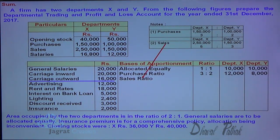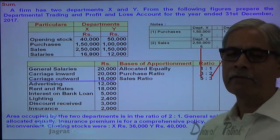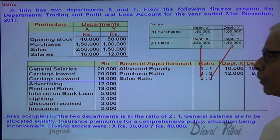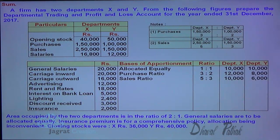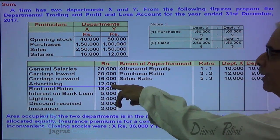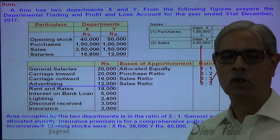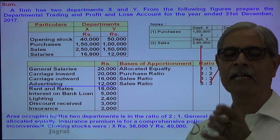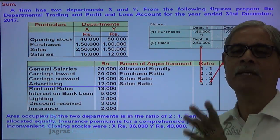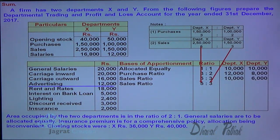Carriage outward uses the sales ratio of 5:3. So 16,000 is distributed as 10,000 and 6,000. Advertisement: 12,000 distributed in the sales ratio 5:3, because advertisement expenditure is incurred for the purpose of promotion of sales, so its effect is on sales. That gives 7,500 and 4,500.